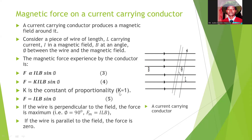If K, the constant of proportionality, is equal to 1, we have equation 5. If the conductor is perpendicular to the field, the force is maximum. The angle theta will be 90 degrees, giving sine theta equal to 1. A conductor in a magnetic field will experience maximum force when it is perpendicular to the field.